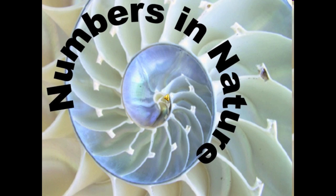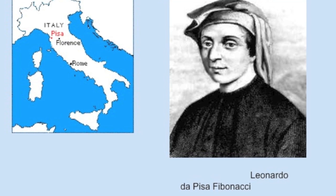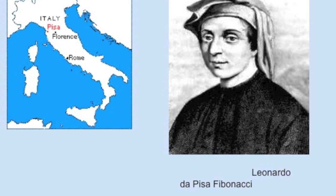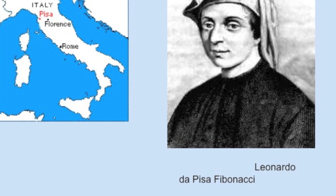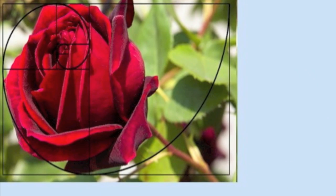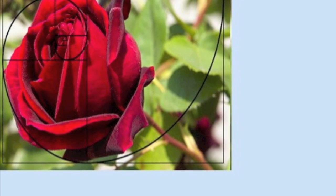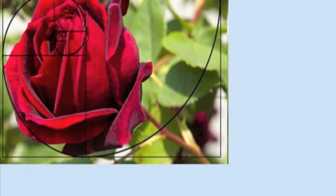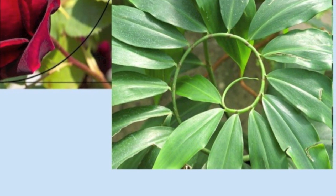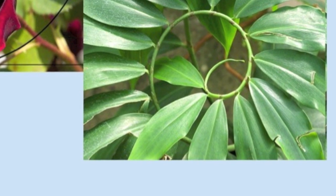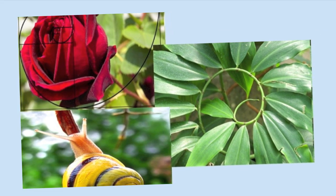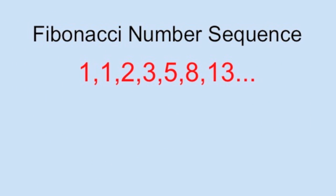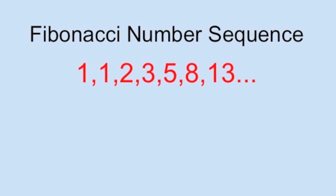Even nature can be described in numbers. Almost 800 years ago, Italian mathematician Leonardo Fibonacci noticed that there were patterns all around him — in the petals of a flower, the branches of a tree, and the spiral of a snail's shell. In 1202, he discovered a way to describe these patterns through mathematics.